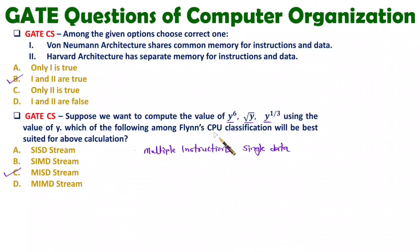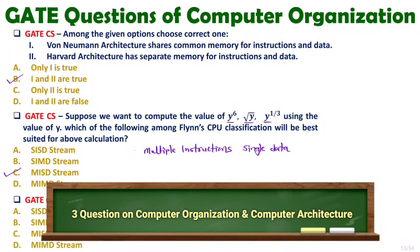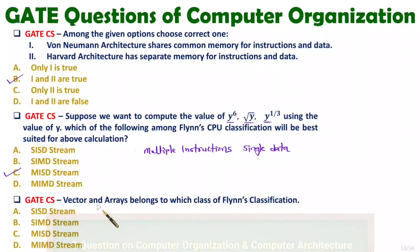Now I am going to explain you third MCQ. In third question, vector and arrays belongs to which class of Flynn's classifications. So here you should understand one thing. See vector and array means what? Let us say I am talking about one array. Let us say array is y and this y that is as per y0, y1, y2, y3 and so on up to yn.